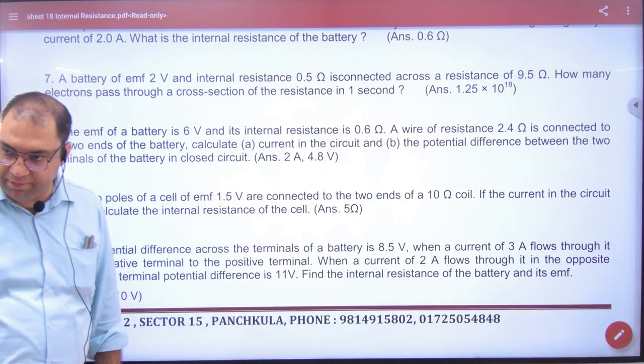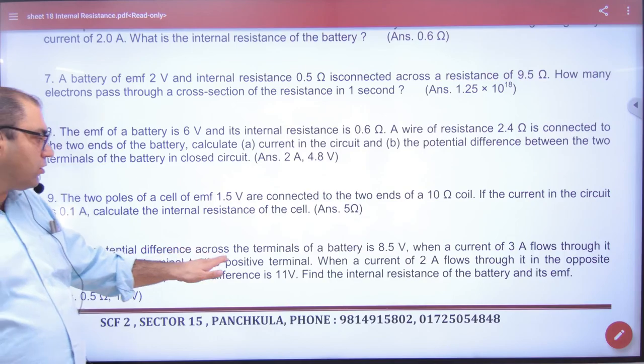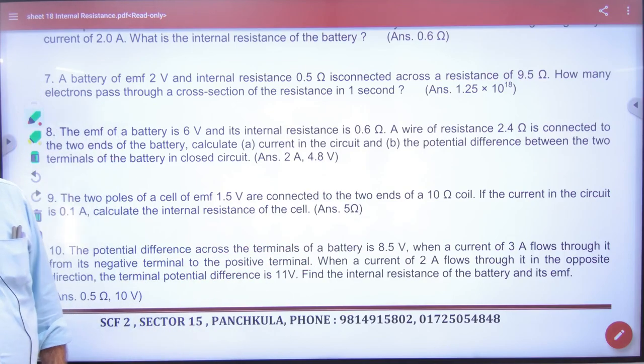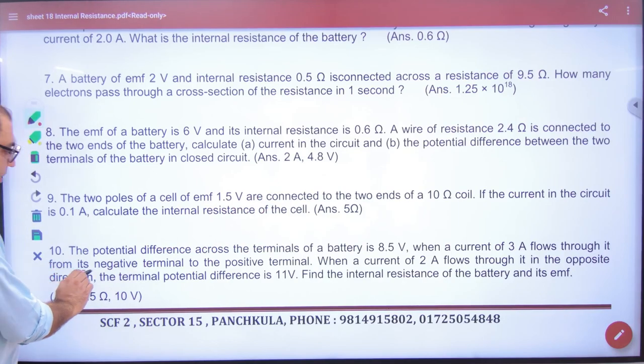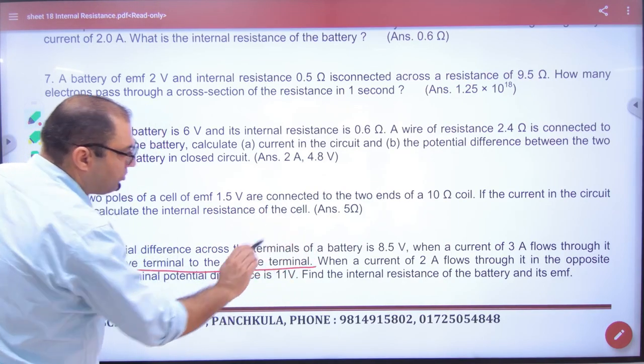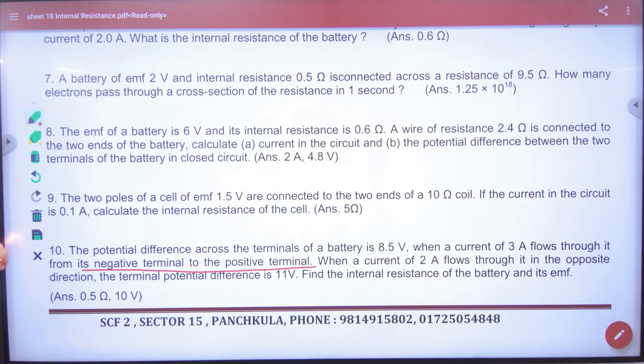This is charging and discharging concept. The potential difference across the terminal of the battery is 8.5V when a current of 3A flows through it from the negative terminal to the positive terminal. First, understand one point.